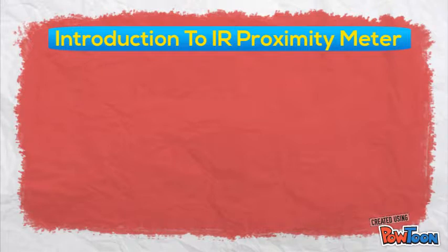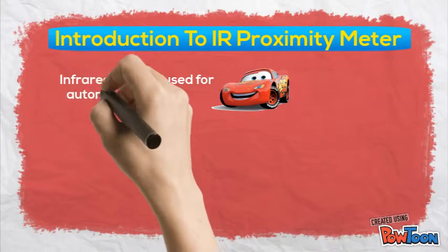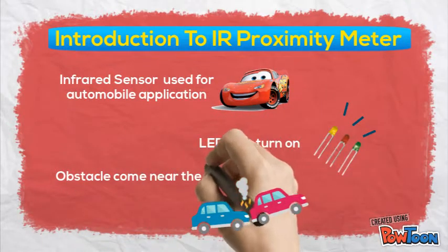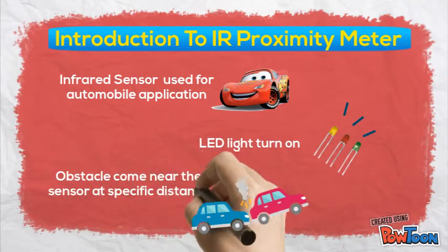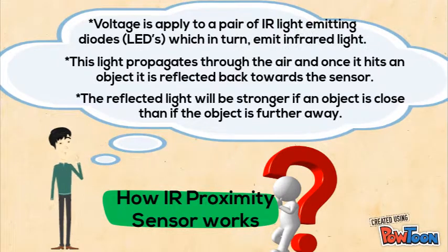Our project is about an infrared sensor used for automobile applications where an LED light will turn on when an object or obstacle comes near the sensor at a specific distance. An IR proximity sensor works by applying voltage to a pair of IR light-emitting diodes which emit infrared light. This light propagates through the air, and once it hits an object, it is reflected back towards the sensor. If the object is close, the reflected light will be stronger.